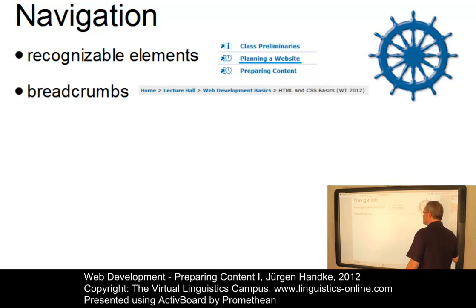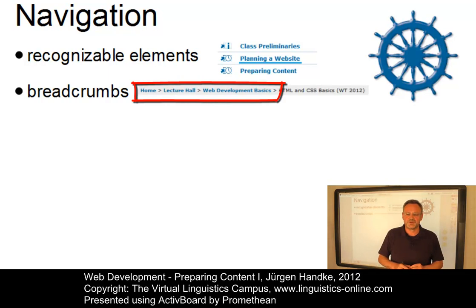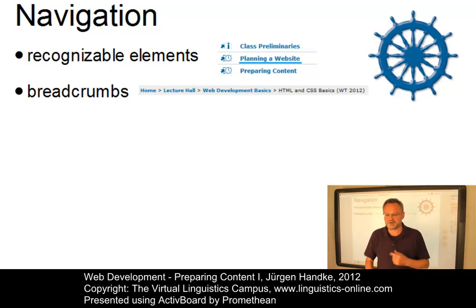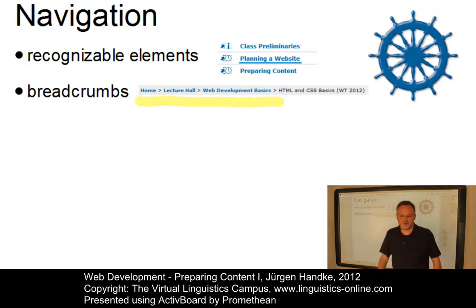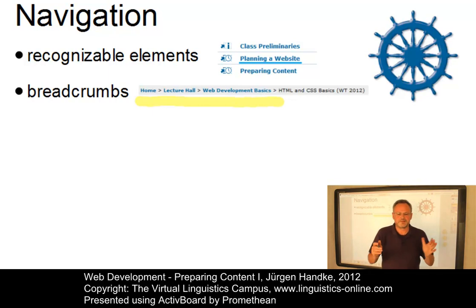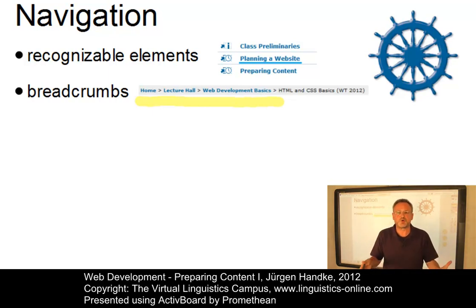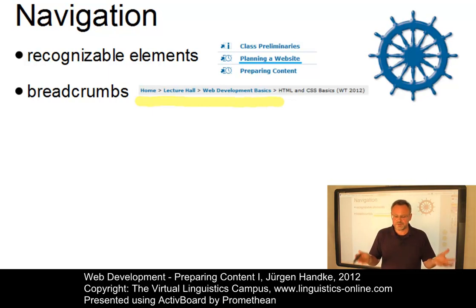Breadcrumbs are important in two ways. Users can easily return to more general levels of the site structure, and breadcrumbs can be an element of orientation. An example is the menu line associated with one of our VLC classes, where the path the user has taken up to a given point is shown, with the additional possibility to return to previously visited pages. Furthermore, the user can see how deep into the site structure they have already advanced. A disadvantage is that similar levels of hierarchy are not reachable through this kind of navigation.